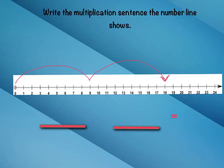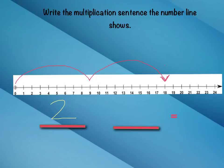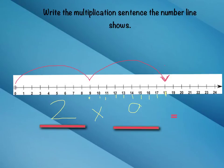Now let's take a look at this number line. It's already got jumps on it. So we're going to write the multiplication sentence that the number line already shows us. Let's look first — the first thing we need to figure out is how many jumps are there. Well, there's one, two jumps. So I'm going to write two as one of my factors. Now, how many are in each jump? From zero to the first jump, we have nine. And from nine to the second jump, we have nine spaces. So we went two groups of nine jumps, and we landed on 18. So two groups of nine, or two times nine, gives us the product of 18.